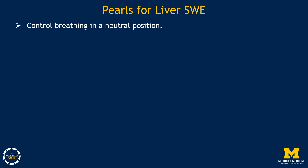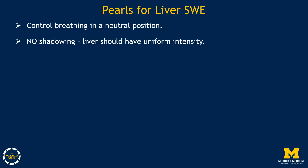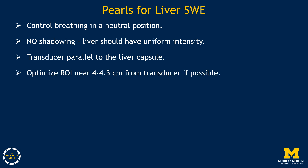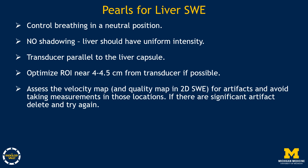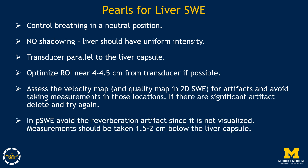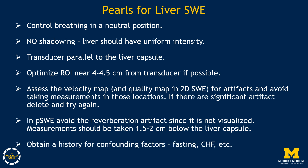Pearls for liver shear wave elastography: control breathing in a neutral position; no shadowing; liver should have uniform intensity; transducer should be parallel to the liver capsule; optimize region of interest near 4 to 4.5 centimeters from transducer if possible. Assess the velocity map and quality map in 2D shear wave elastography for artifacts and avoid taking measurements in those locations. If there are significant artifacts, delete and try again. In point shear wave elastography, avoid reverberation artifact since it is not visualized. Measurements should be taken 1.5 to 2 centimeters below the liver capsule, and obtain a history for confounding factors such as fasting and congestive heart failure.